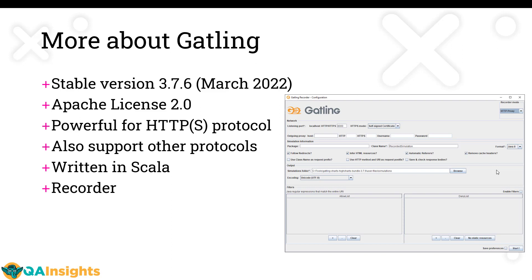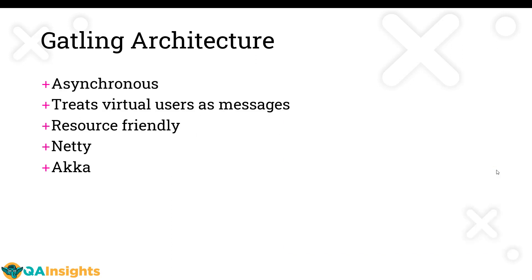Gatling is written in Scala and it comes with a built-in recorder. This recorder will help you capture your business transactions, and you can convert them into Java, Scala, or Kotlin.